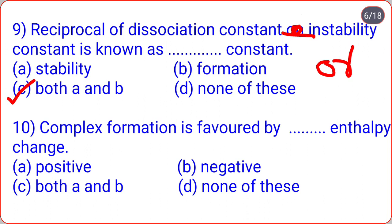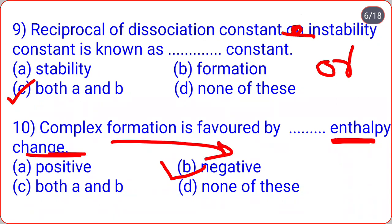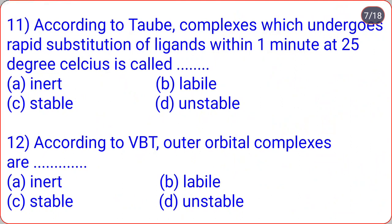Complex formation is favored by negative enthalpy change — correct option B, negative. The enthalpy change must be negative for complex formation to be favored.